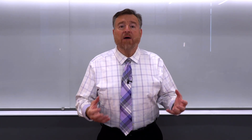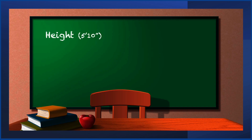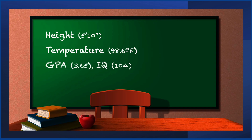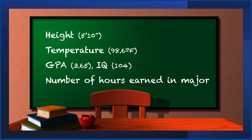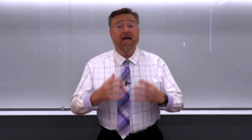Examples of quantitative variables we could collect: your height, your body temperature or room temperature, your GPA — which is a scale that can have fractions — your IQ, or how many credit hours you've earned in your major. All of these are quantitative variables answering questions of how many and how much.